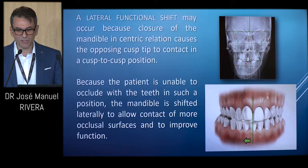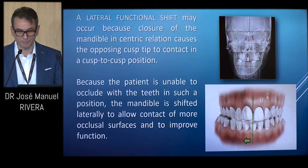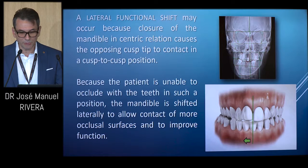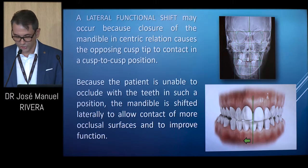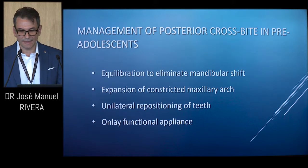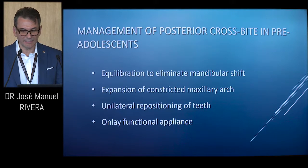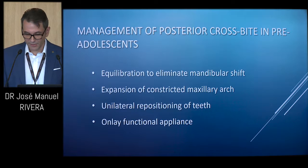A lateral functional shift may occur because closure of the mandible in centric relation causes the opposing cusp to contact in a cusp-to-cusp position. Because the patient is unable to occlude with the teeth in such a position, the mandible is shifted laterally to allow contact of more occlusal surfaces and to improve function. The management of posterior crossbites in pre-adolescence includes equilibration to eliminate the mandibular shift, expansion of the constricted maxillary arch, unilateral repositioning of the teeth, and an onlay type of functional appliance.